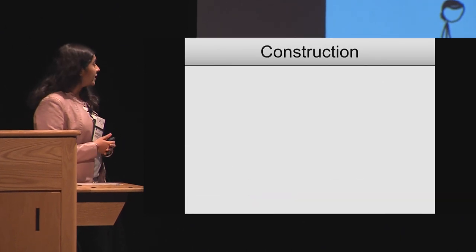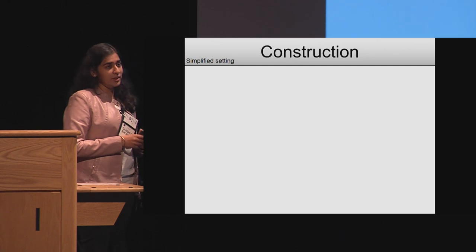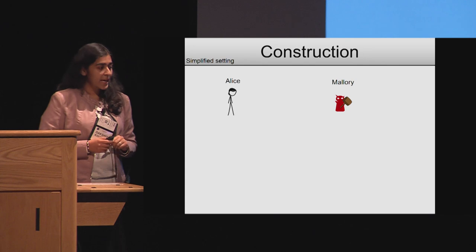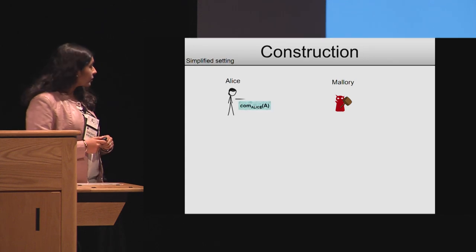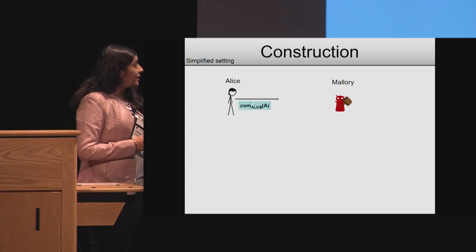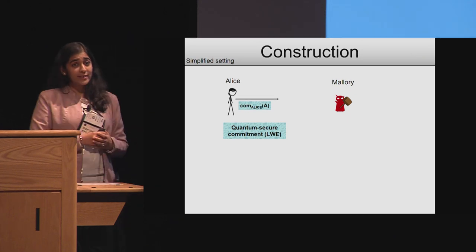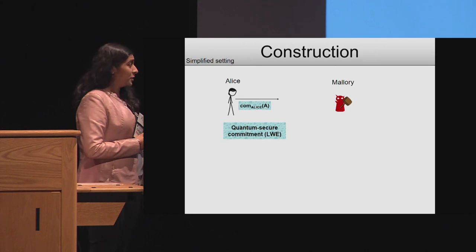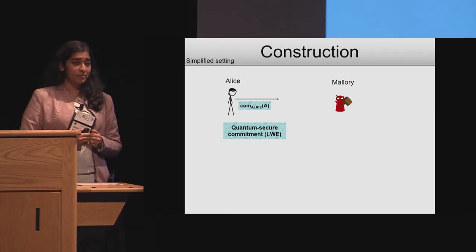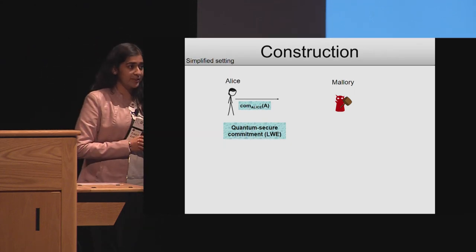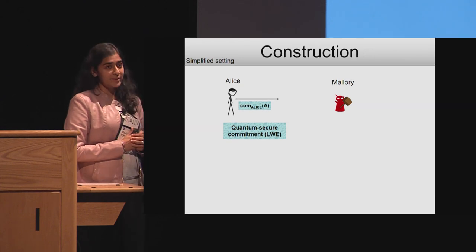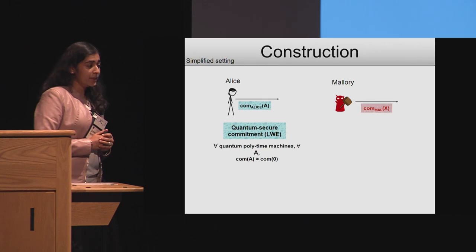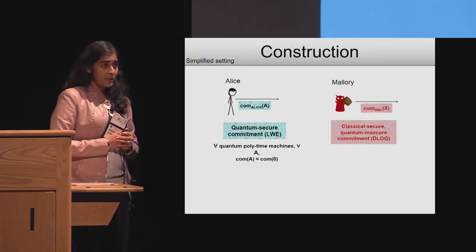Towards achieving it, let me start with a very simple construction in a simplified setting. Let's assume there are only two entities in the world: Alice and Mallory. We will assign to Alice a commitment that is quantum secure — an LWE-based commitment conjectured to be secure against quantum polynomial time adversaries. At the same time, to Mallory, we will assign a commitment that is quantum insecure, but classically secure.